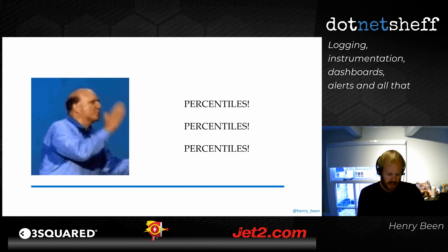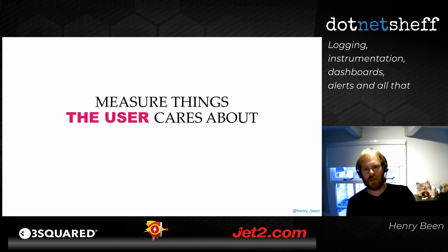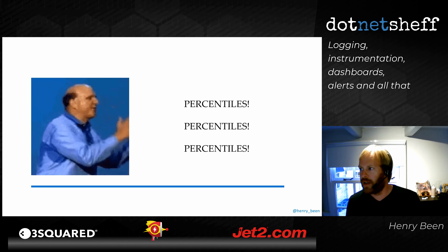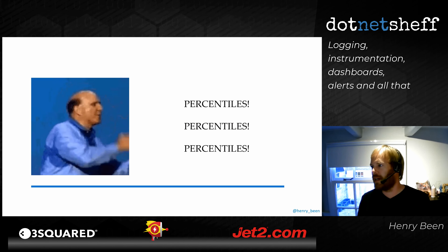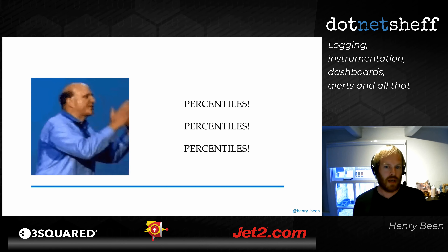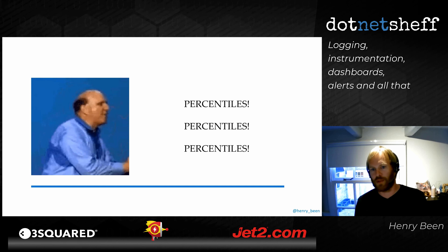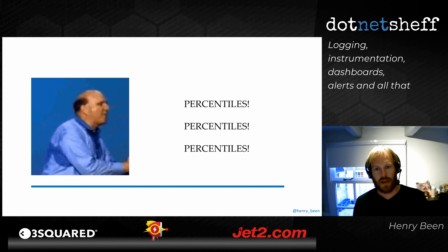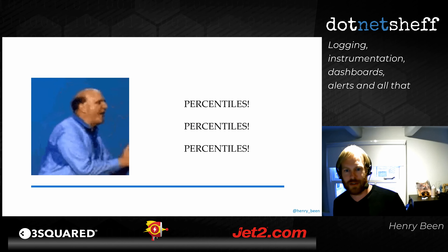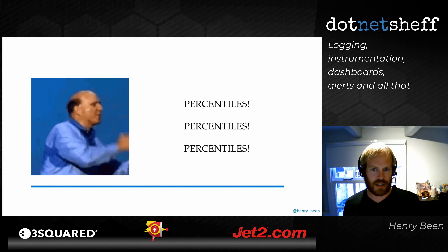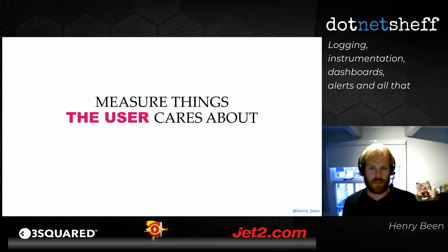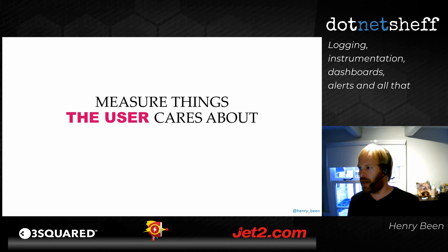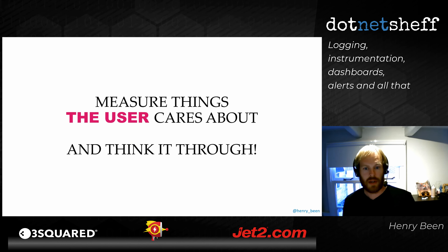The point is: think about the user and the impact on the user, instead of blindly following system metrics. Another point: do not look at averages. Use things like maximum response time or the 99th percentile response time. Bottom line: measure things the user cares about, and think it through — because it can be harder than you might think.